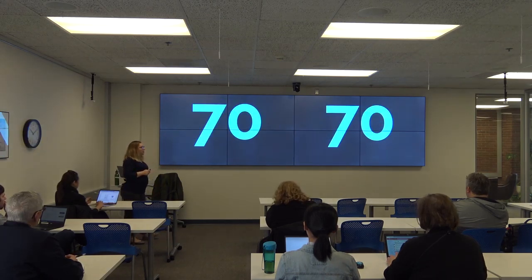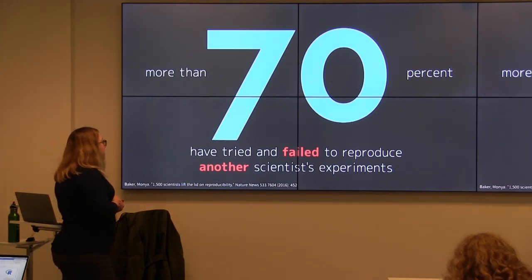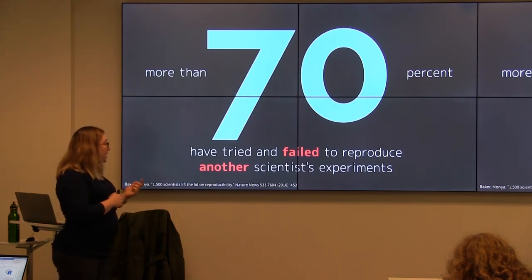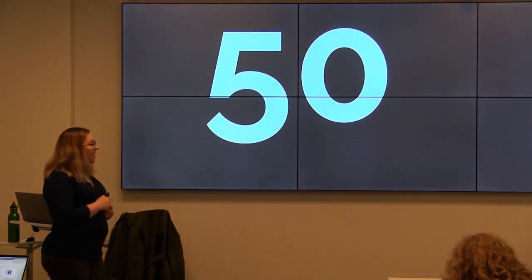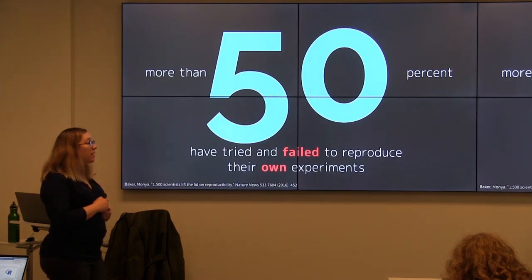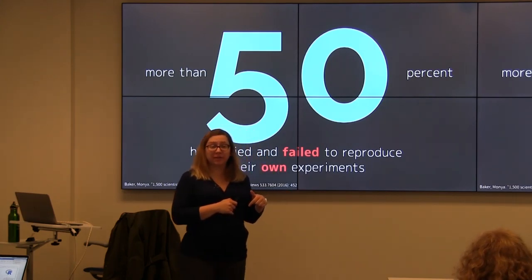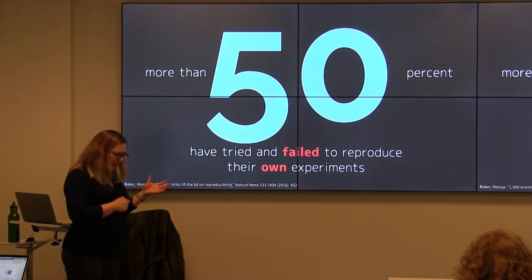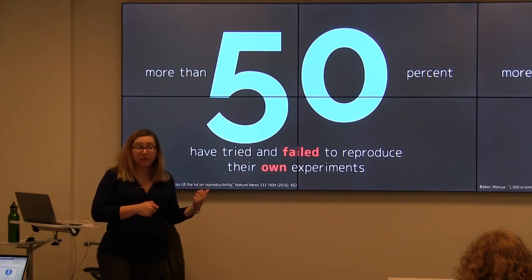Here are the numbers I want to talk about. More than 70% of scientists surveyed by Nature said that they have tried and failed to reproduce another scientist's experiments. More than 50% said they have tried and failed to reproduce their own experiments. This was a survey that Nature published in 2016, on 1,500 scientists that they surveyed. Those are really, really high numbers.